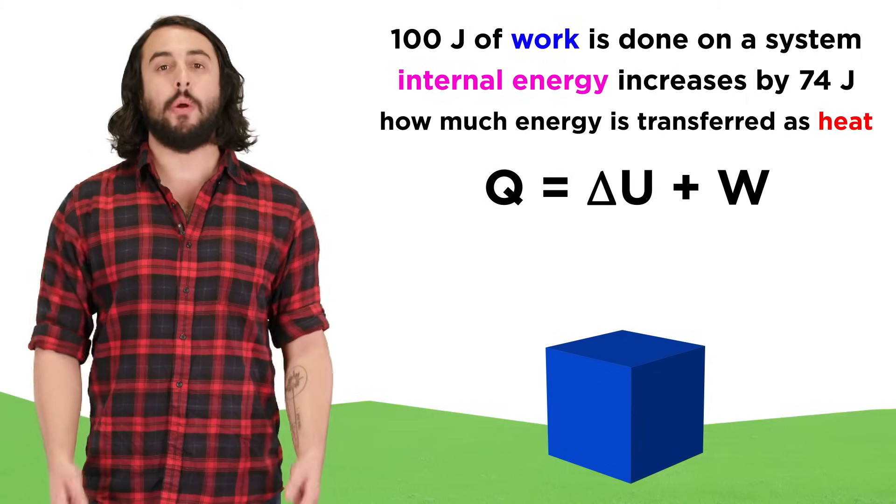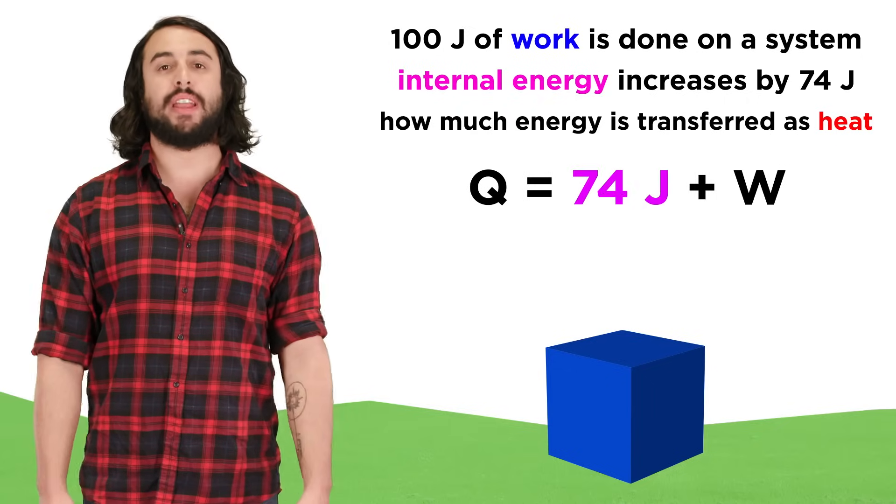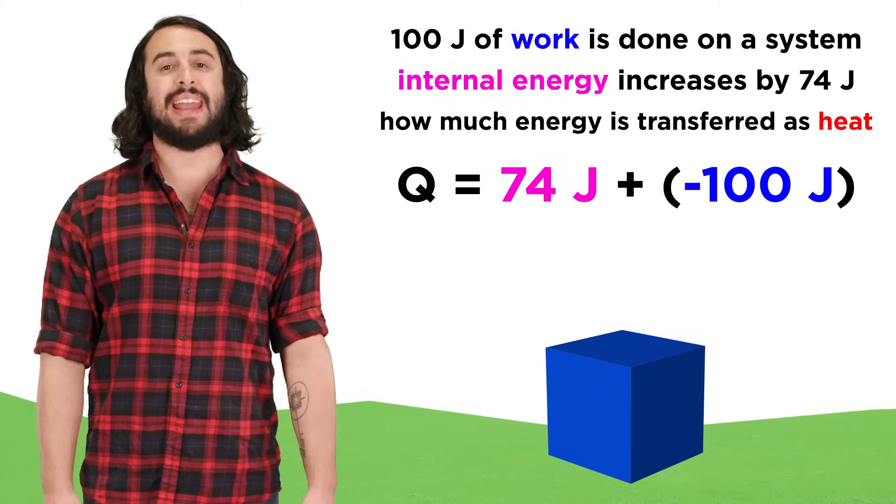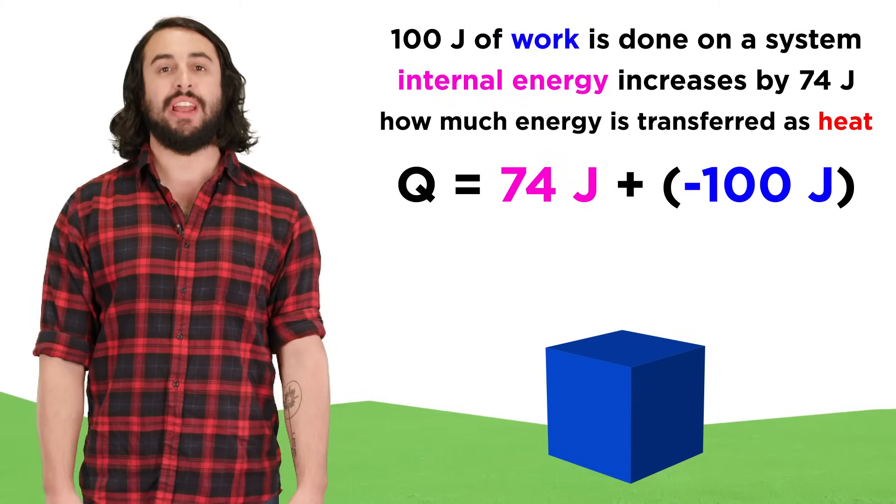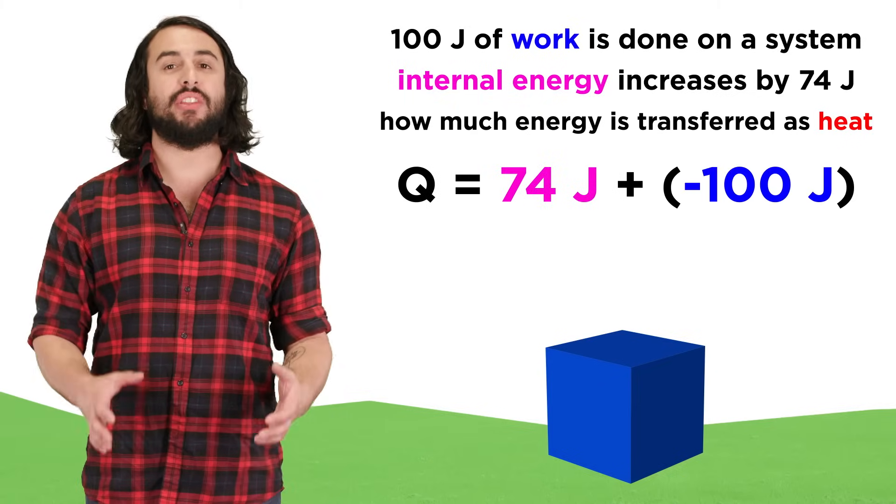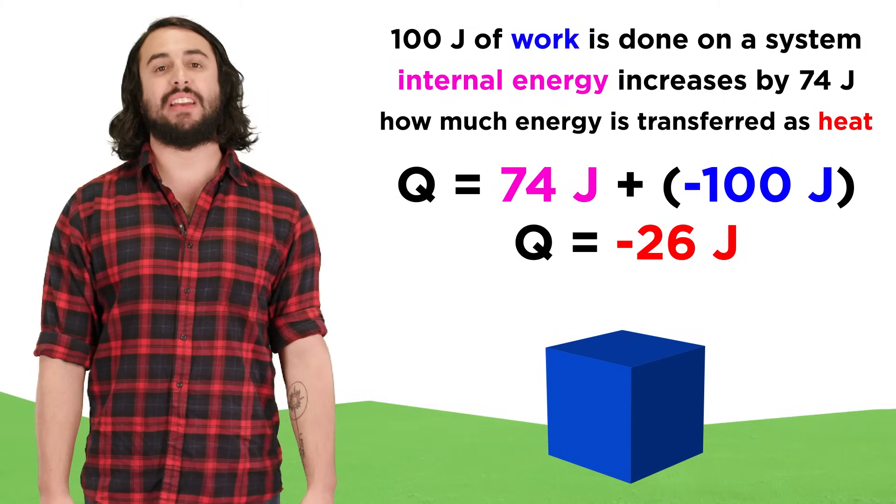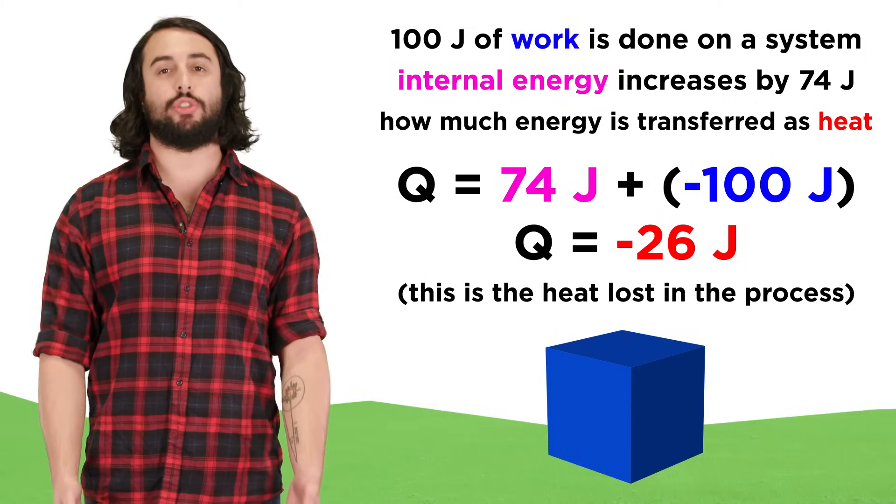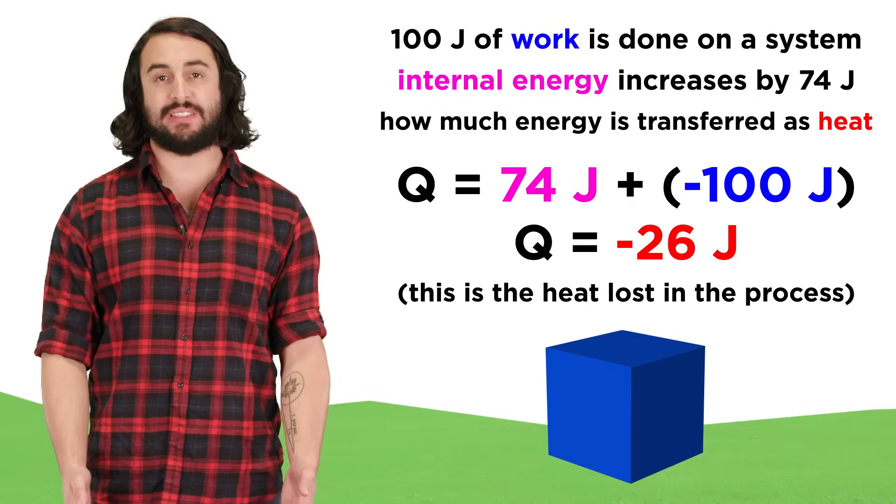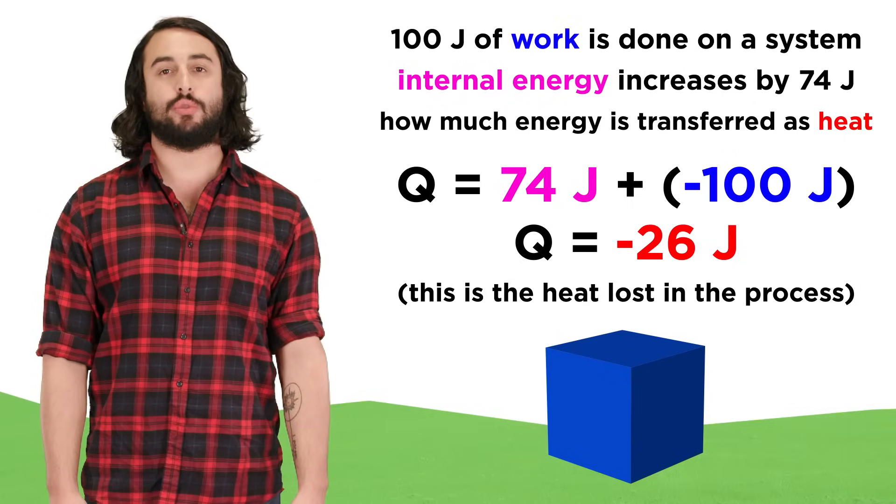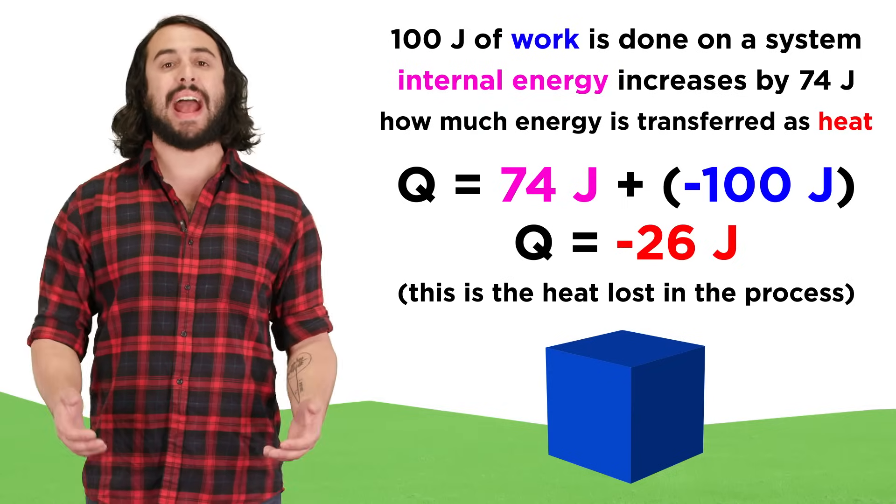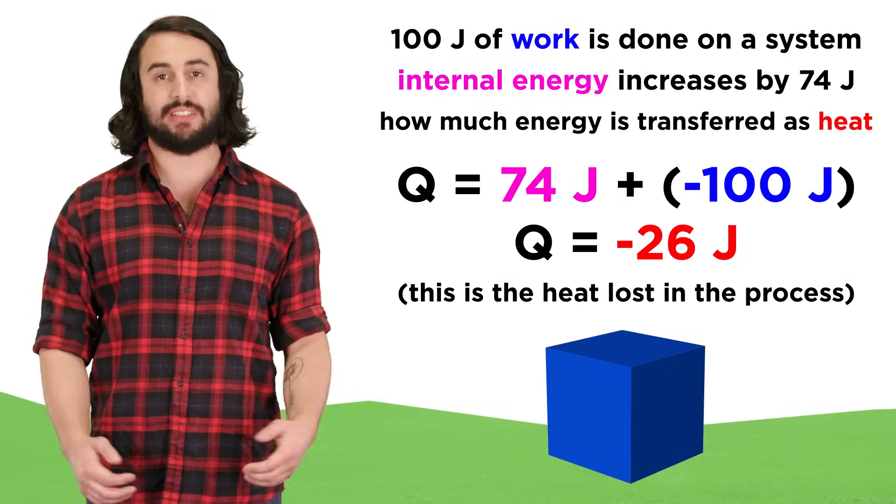Then we can plug in positive 74 joules for delta U, since internal energy increases, and negative 100 joules for work, since work is being done on the system, and we should get negative 26 joules for heat. This means that as 100 joules of work is applied to the system, only 74 go towards increasing the internal energy of the system, while 26 joules are lost as heat dissipates out of the system.